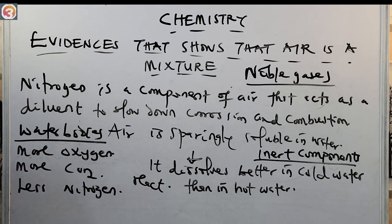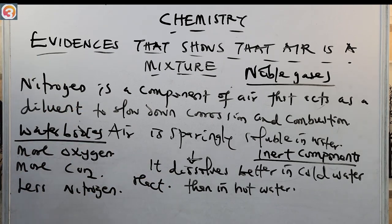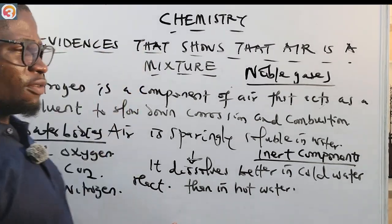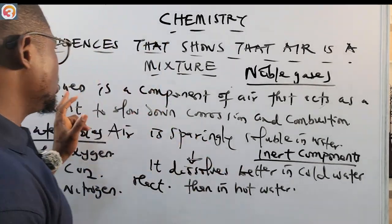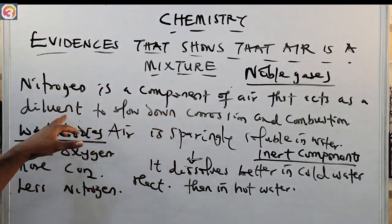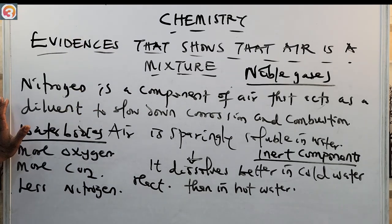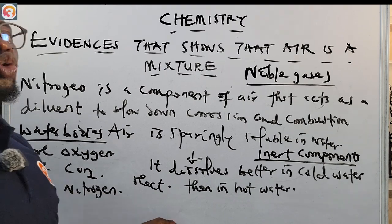So, we have seen four evidences that support that air is a mixture. We talked about oxygen supporting combustion, rusting, and respiration; carbon dioxide produced from respiration and necessary for photosynthesis; nitrogen acting as a diluent to slow down corrosion and combustion; and the noble gases as inert components of air that do not react.